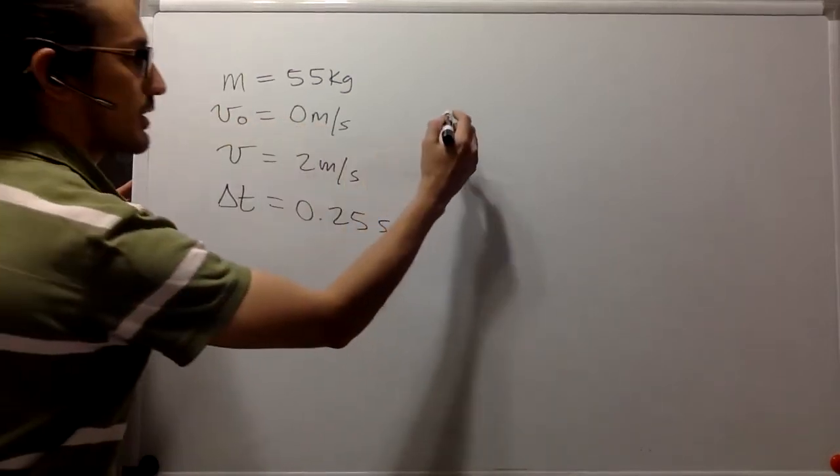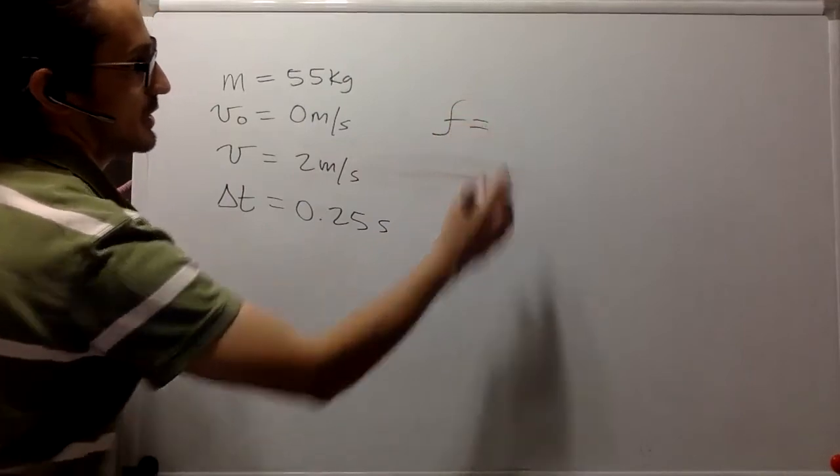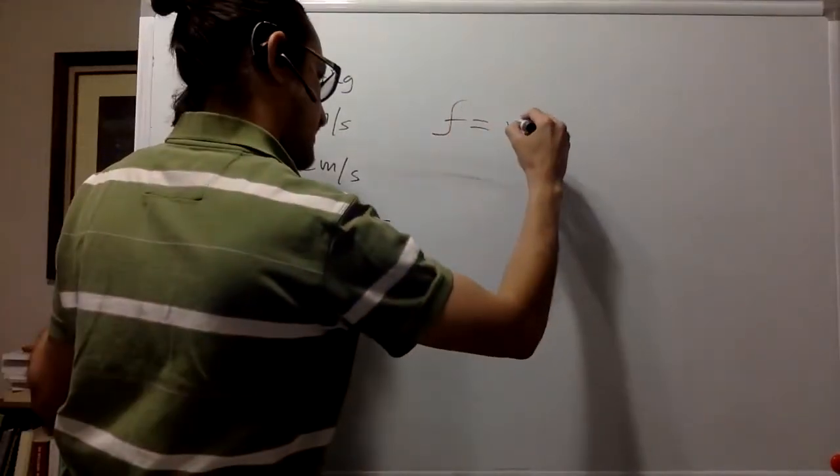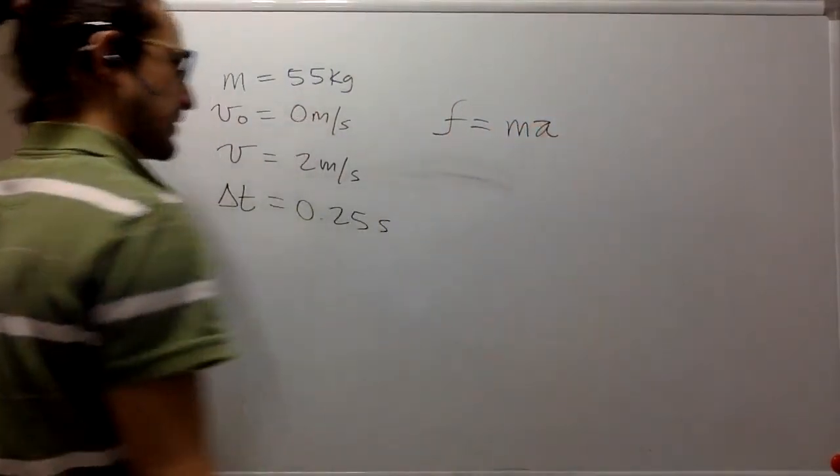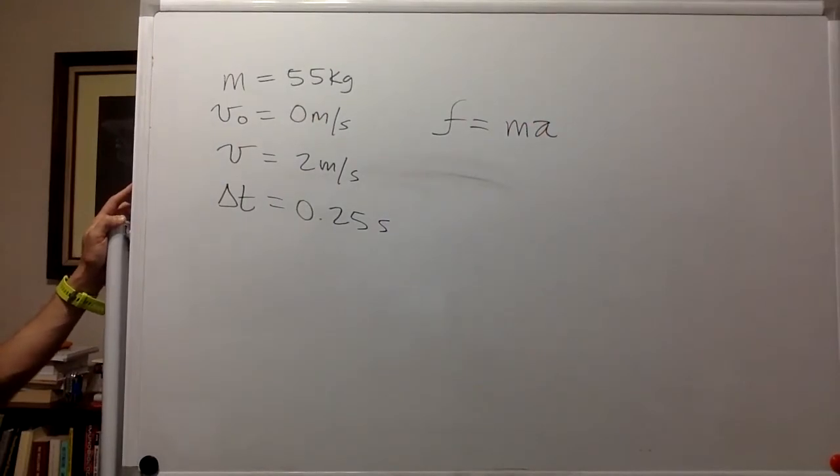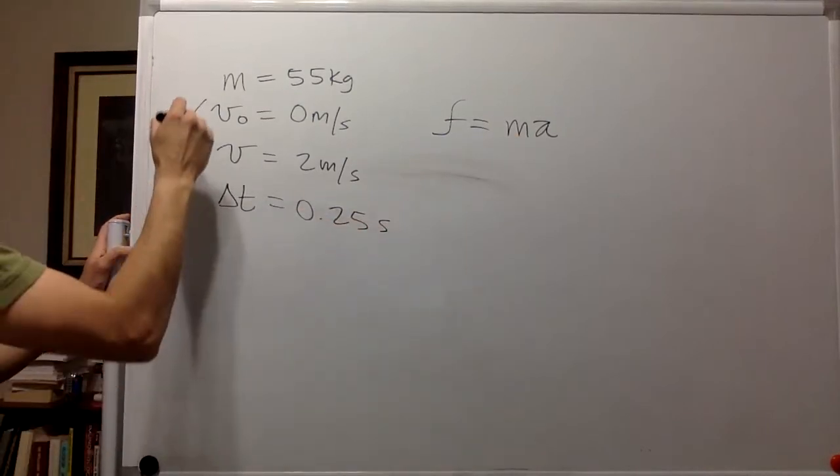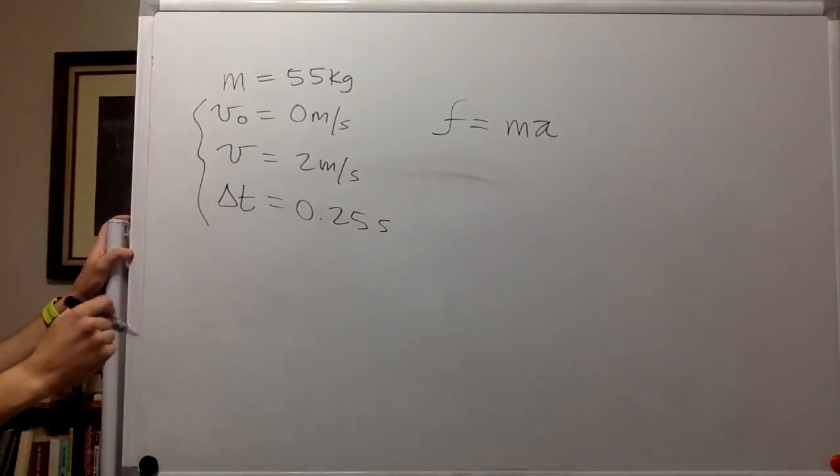What is the magnitude of the friction force? Friction, just like any other force, is mass times acceleration, Newton's second law. We know the mass and we can get the acceleration from this information.